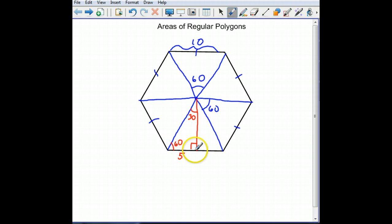That's the short leg of the 30, 60, 90 triangle. So this piece is 5 root 3 and this is 10 and that's 10. So these are all equilateral triangles.